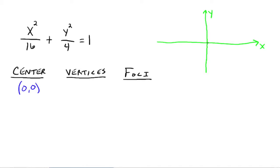The center's not part of your graph — we're just making note where the center's at. Because from the center, that's how we're going to get to the vertices for the major axis. Since the larger number, 16, is under the x squared, you're going to have a horizontal major axis. From the center, you go out whatever your a value is — really, the square root of that number. The square root of 16 is 4.